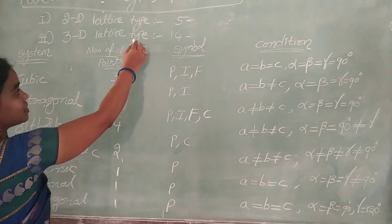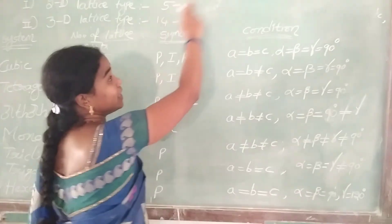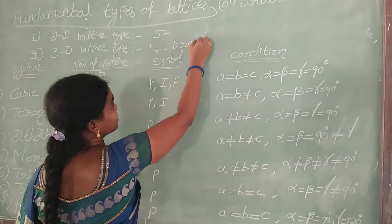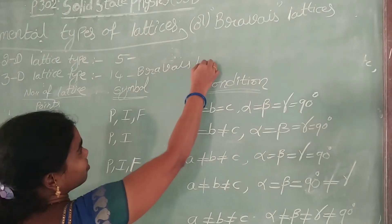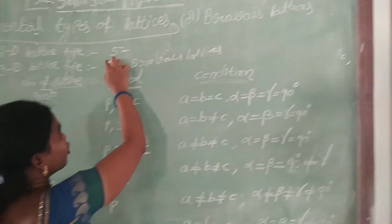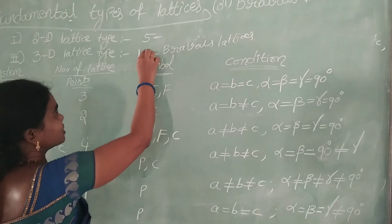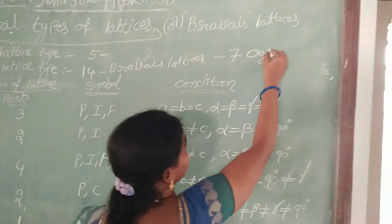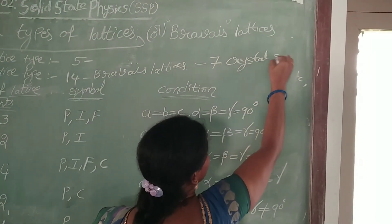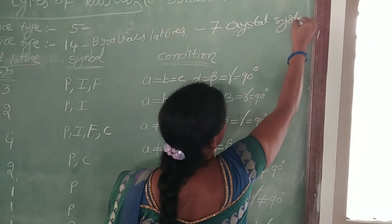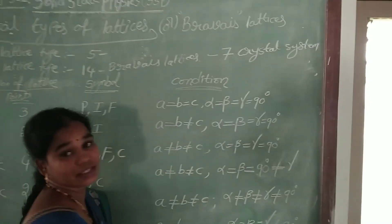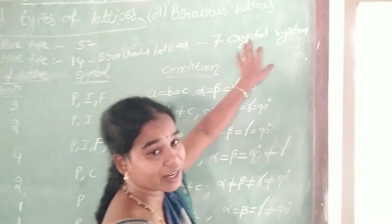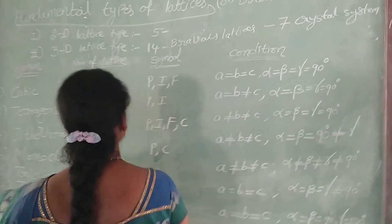For three-dimensional lattice types, we have 14 types of Bravais lattices. These 14 types of Bravais lattices are combined into 7 crystal systems.